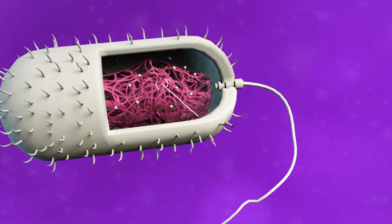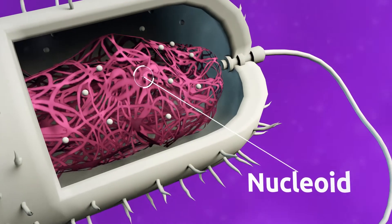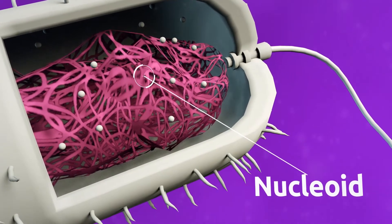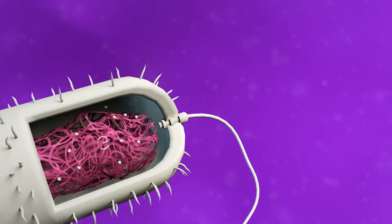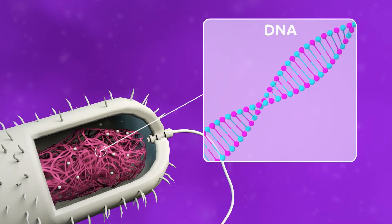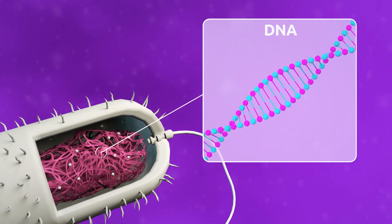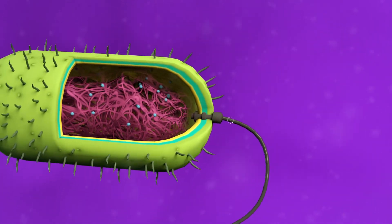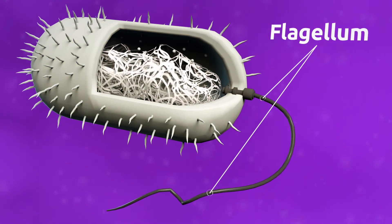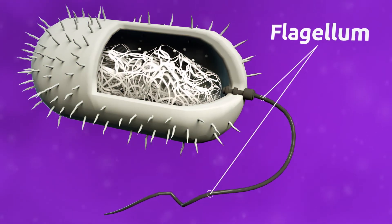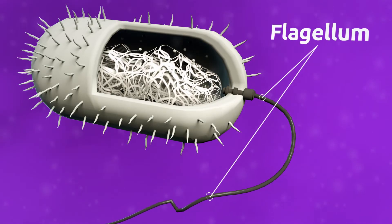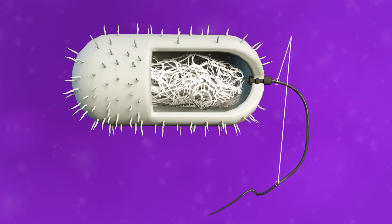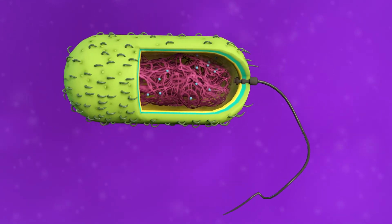The nucleoid is the part of the cell where DNA is found. DNA is formed by genes which store the genetic information of a living being. The flagellum is found in some prokaryotic and eukaryotic cells — it is a lash-like appendage which allows a cell to move.